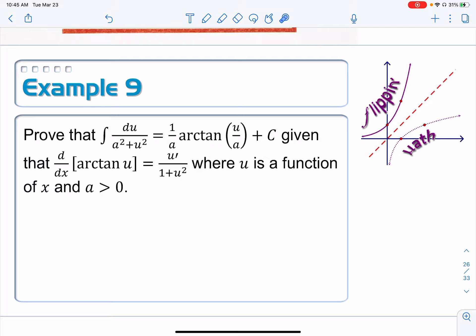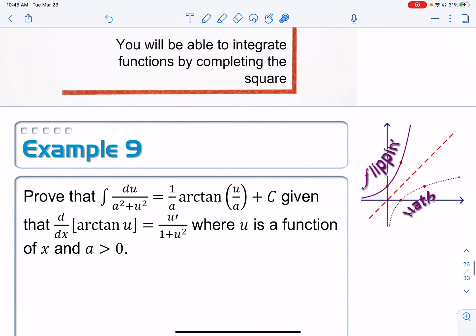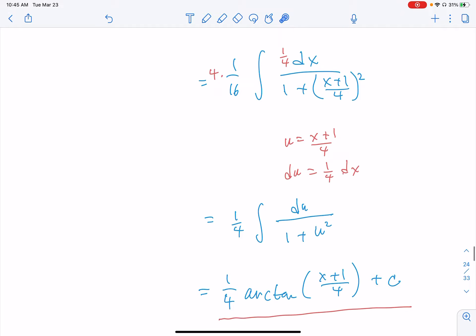Our goal with Example 9 is to prove that the antiderivative of du/(a² + u²) equals (1/a)arctan(u/a) + c. The reason we want to do this is because of Example 8 that we just did.